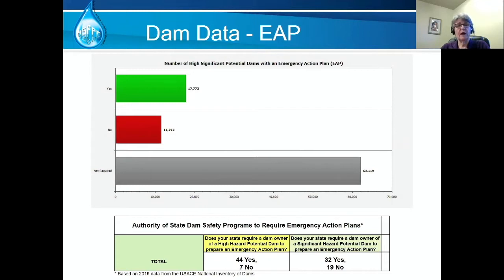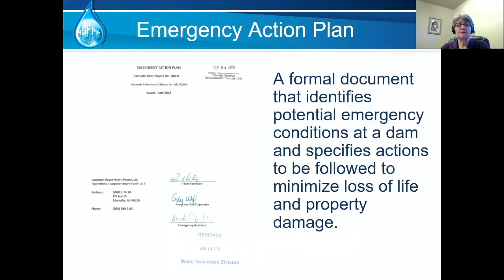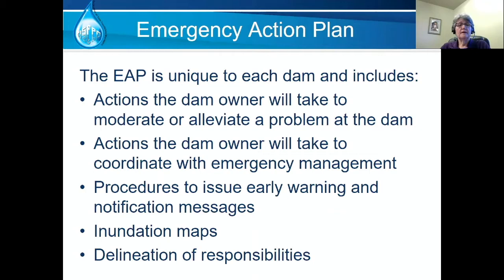This leads the regulator to try to cajole or guilt the dam owner into creating the plan if they're not willing to do it on their own volition. 'Run for it' is not an adequate emergency action plan. Rather, the plan is a formal document that identifies potential emergency conditions at the dam and the actions that need to be followed to minimize the loss of life and property damage. The EAP identifies actions the owner needs to take to address on-site problems, actions to coordinate with local emergency managers, warning and notification procedures, information on where the water will go and how fast it gets there if the dam fails, and who is responsible for doing what in the plan.